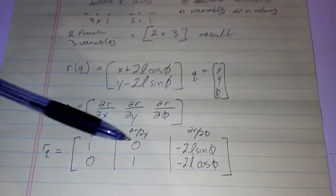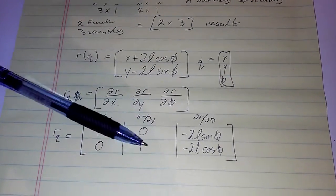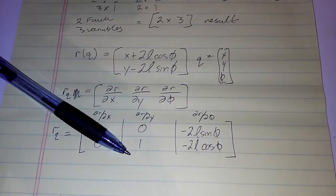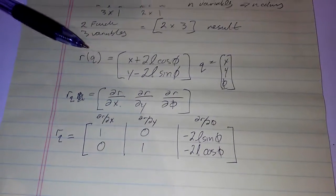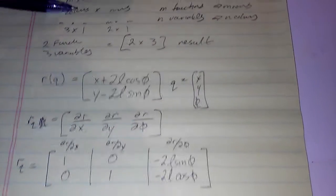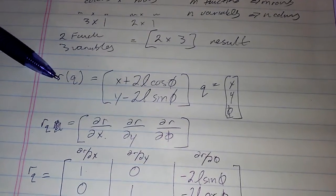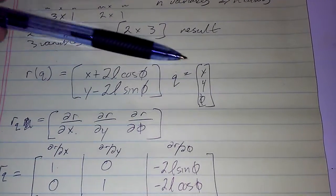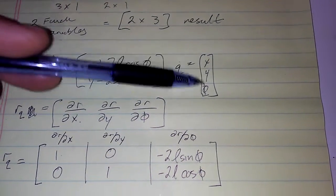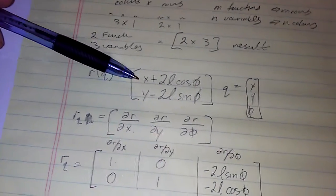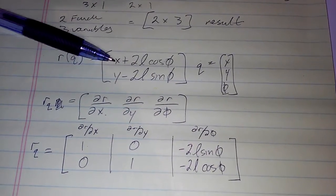So without further ado, if we have a matrix r of q where q is a vector of x, y, theta, or x, y, phi, and we have an example of two rows here, one column, two rows: x plus 2L cosine phi and y minus 2L sine phi.